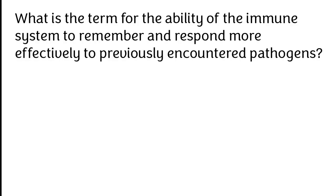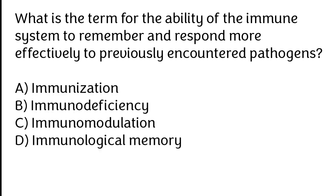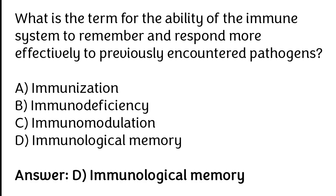What is the term for the ability of the immune system to remember and respond more effectively to previously encountered pathogens? Immunization, immunodeficiency, immunomodulation, immunological memory. The correct answer is option D. Immunological memory is the term for the ability of the immune system to remember and respond more effectively to previously encountered pathogens.